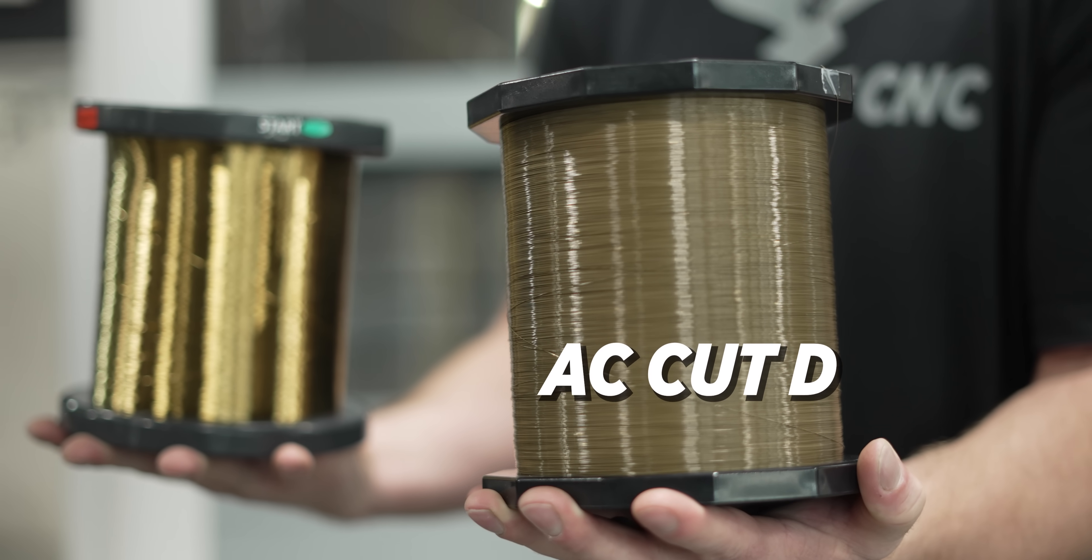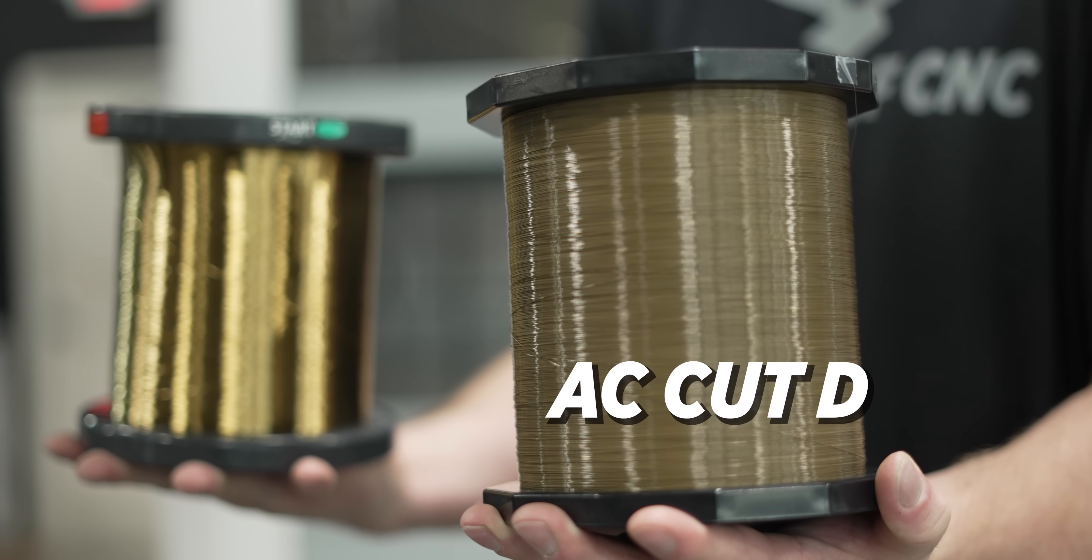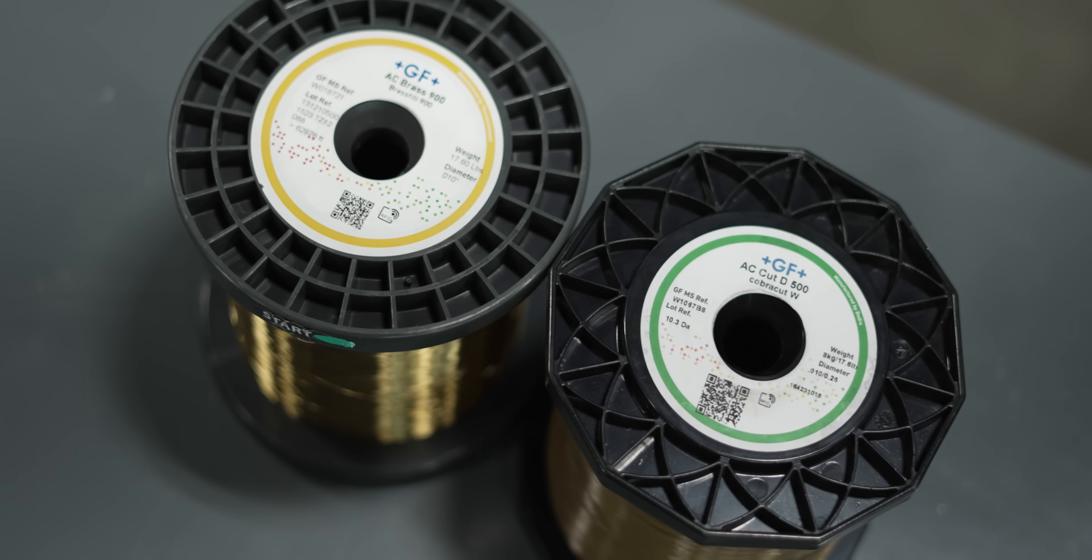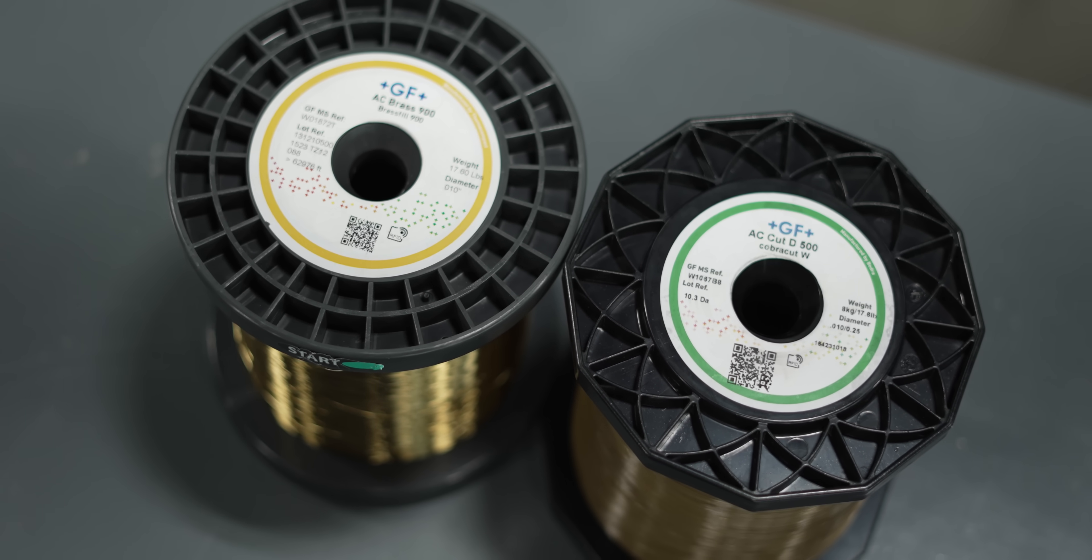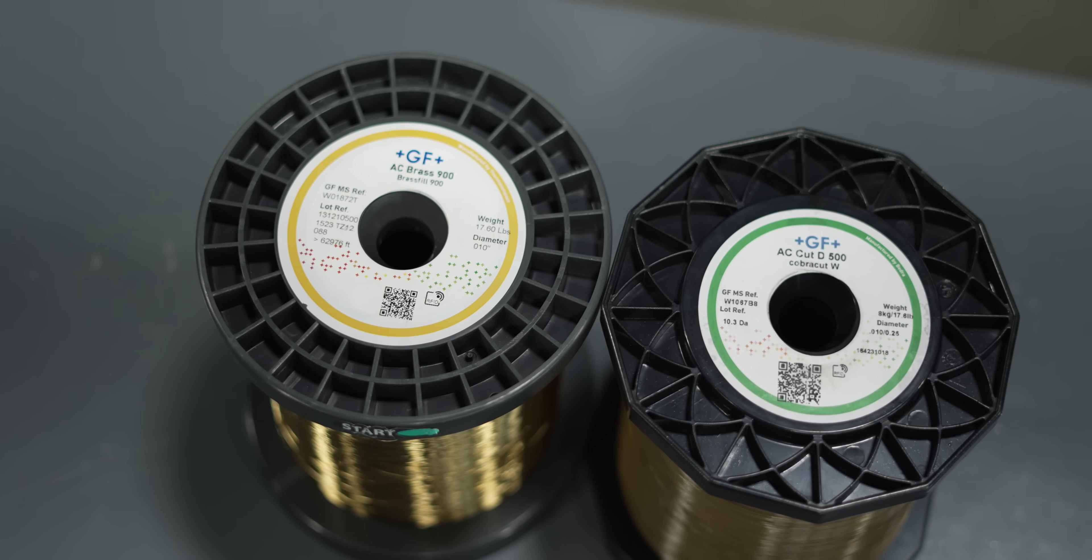As you can see our AC cut D has a much different appearance than our standard brass wire. That's because of the higher copper content in both the wire and the coating of the wire.